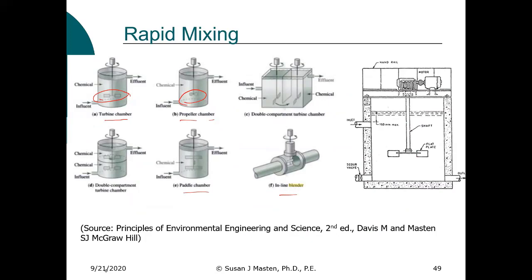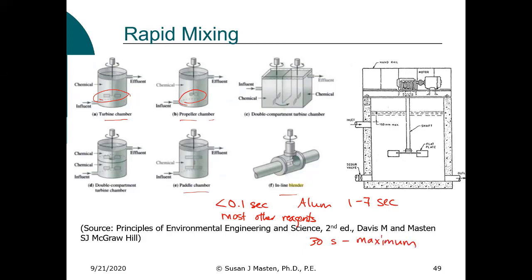These reactions are rapid — typically they take less than 0.1 seconds. For alum, they take about 1 to 7 seconds. Detention times need to be less than 30 seconds at the absolute maximum. So the maximum detention time in any of these reactors is 30 seconds.